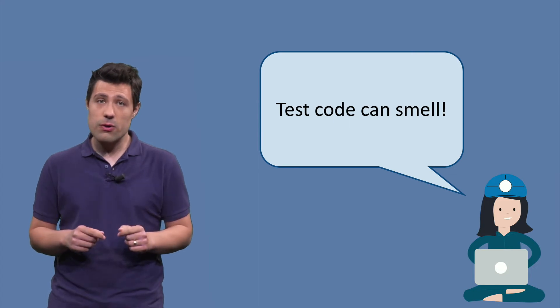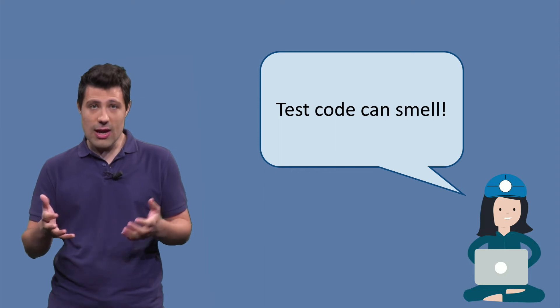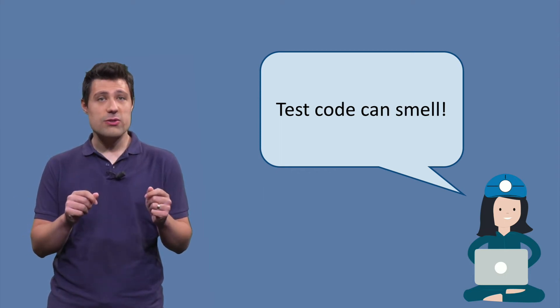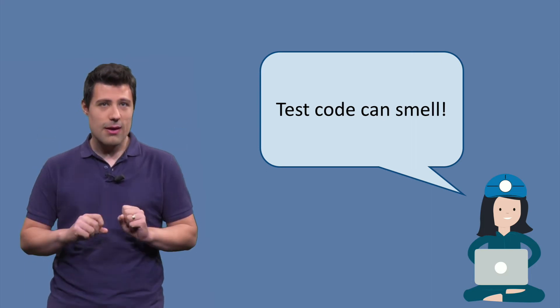If we apply the same idea for test code, we have test smells. A test has an Arrange, Act and Assert part. And each of these parts have their own challenges. And therefore, lots of things can go wrong or smell in any of them.